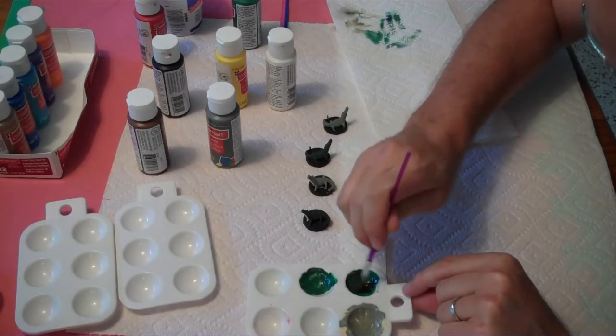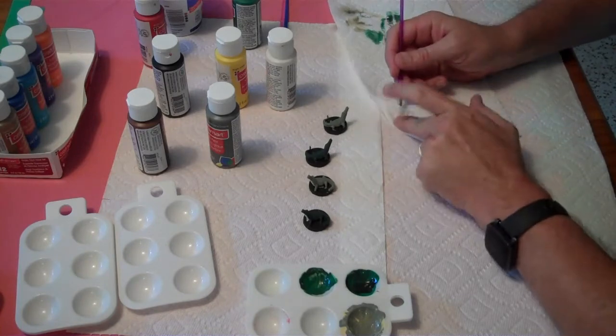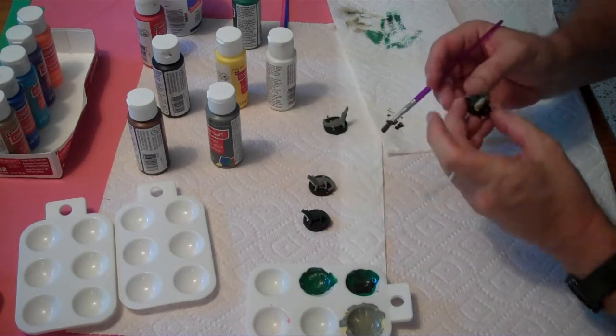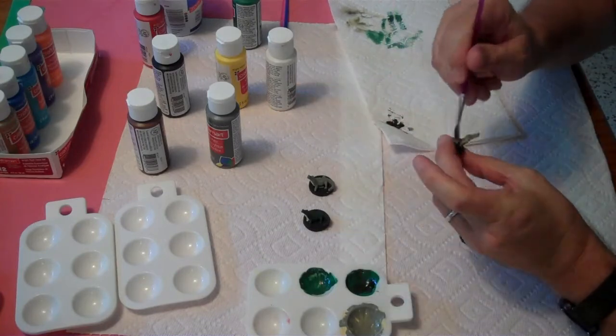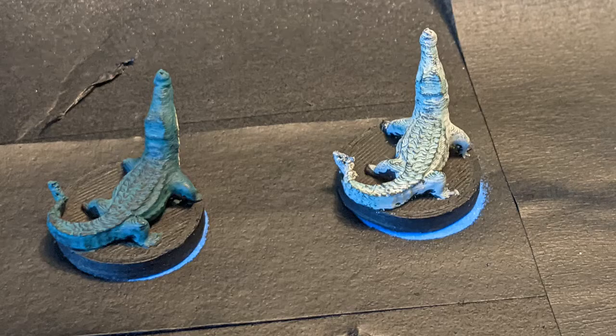After the base coat was dry, I put some of the leftover almost black into a dry brush, wiped most of it off, and then dry brushed the back of one of the green figures and one of the gray figures. This left black paint only on the high points.